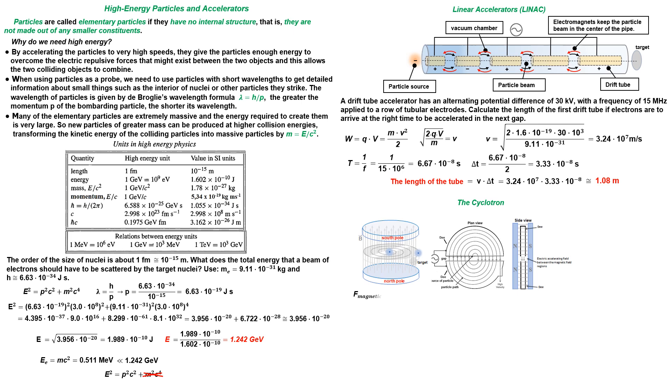When the particles are within the dees, their radius and speed are related as follows: r = mv/(qB).